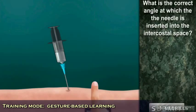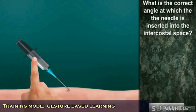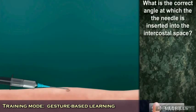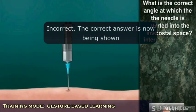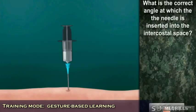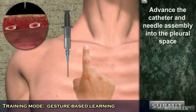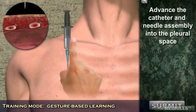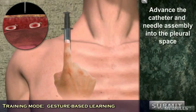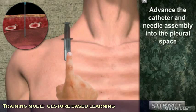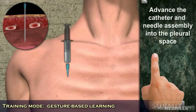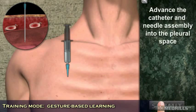Throughout training mode, users are provided multiple chances to demonstrate competence. If a user gets a step wrong multiple times, they are shown the proper technique for completing the task. When appropriate, Medrills uses anatomy augmented visualizations. Use of the internal anatomy can help a trainee obtain a better understanding of the relationship between an external task and its effect on the patient internally.